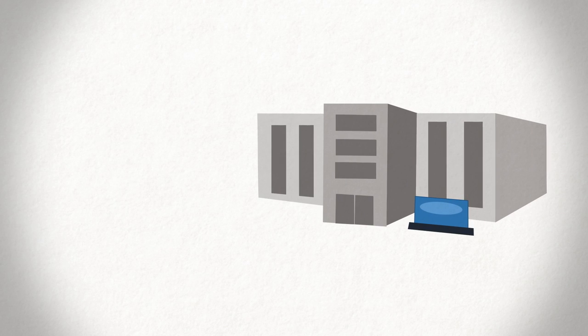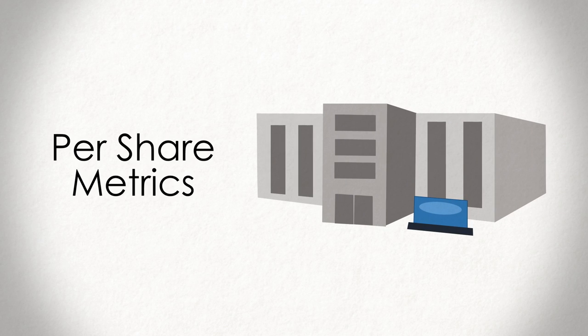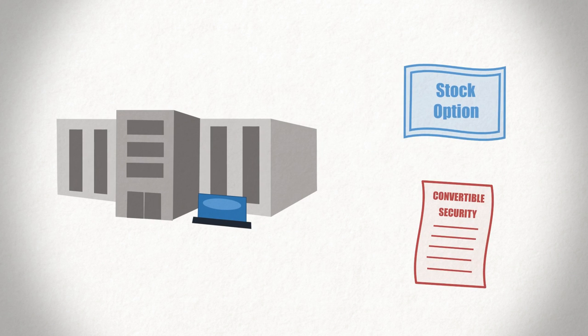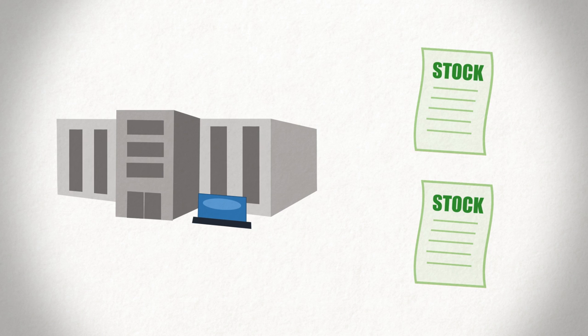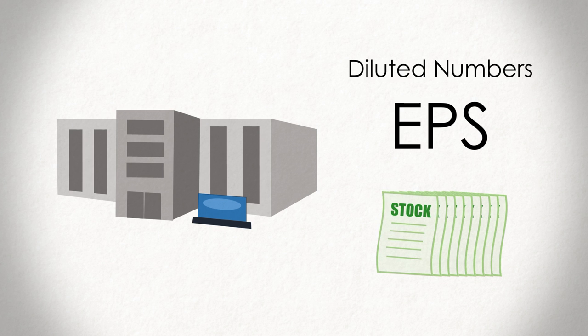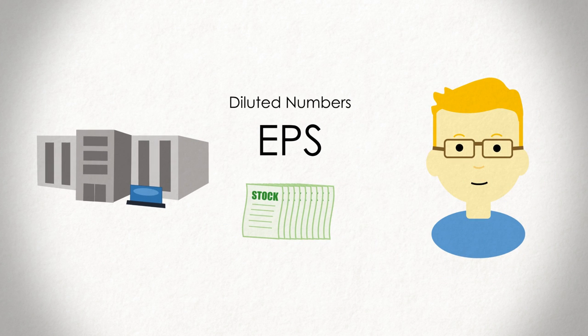Finally, when looking at a company's per share metrics, such as EPS, make sure to take into account the company's diluted numbers. As mentioned earlier, a company may have other securities outstanding that can be converted into shares at some point in the future, and diluted numbers show you what the per share metric would be if all these outstanding securities were turned into stocks. It's a great way to conservatively analyze a company's operations.